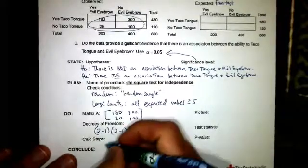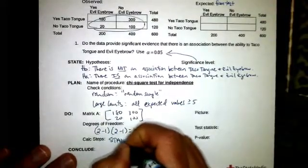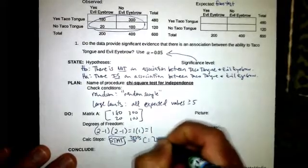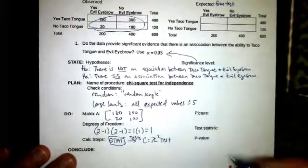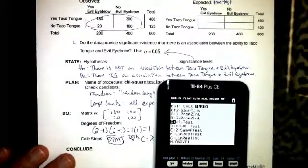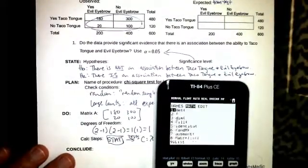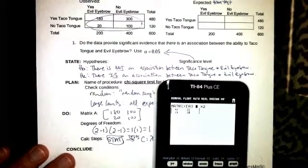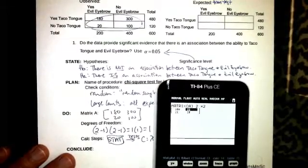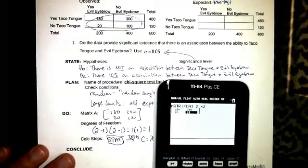Calculator steps, we want to now go to stat to the right to test, and C is our chi-squared test. So we're going to type that matrix in to matrix A. We'll go second to the matrix menu there, second x to the negative one, two by two: 180, 300, 20, 100.